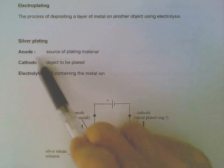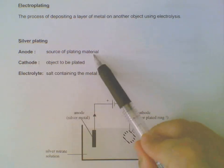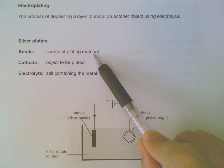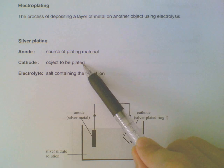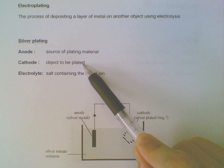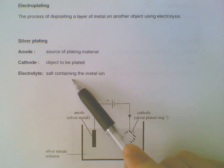At the anode will be the source of the plating material. In this case we will use silver. At the cathode will be the object that we want to be plated. So if we want a ring or a spoon to be covered with silver, we will put the ring or the spoon at the cathode. The electrolyte should contain the metal ion, so in this case electrolyte must contain silver ion.